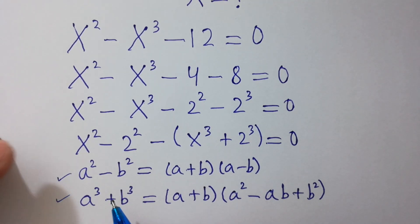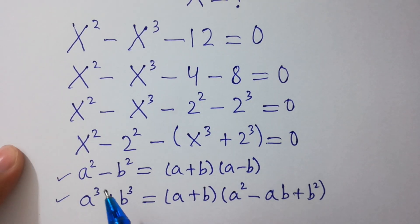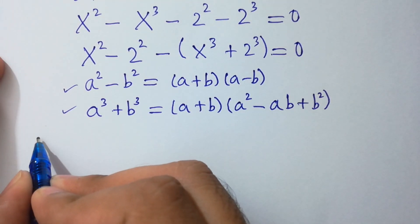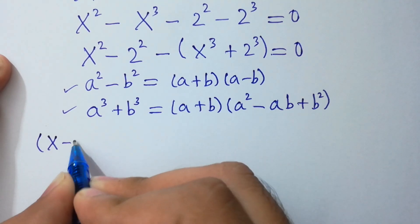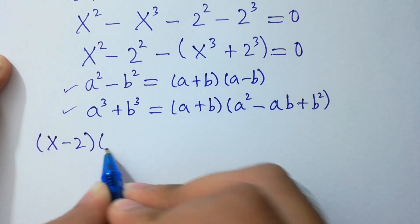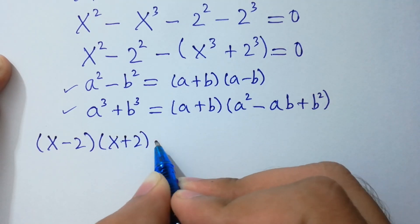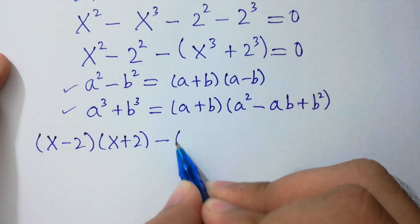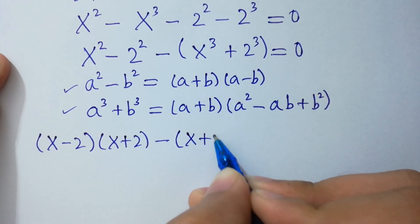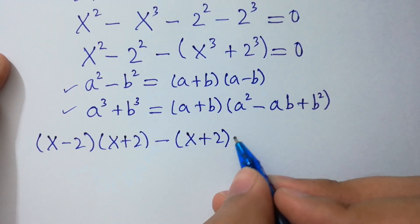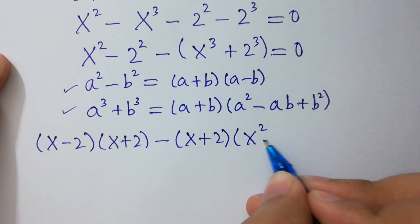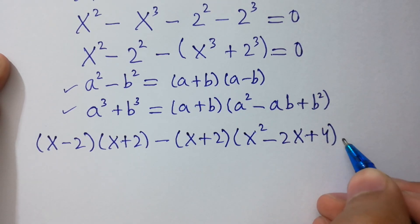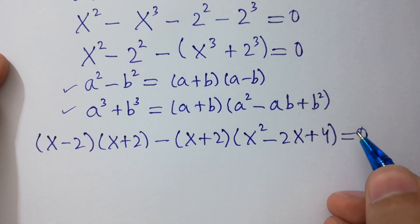So we can write x squared minus 2 squared as (x minus 2)(x plus 2), and x cubed plus 2 cubed can be written as (x plus 2)(x squared minus 2x plus 4), equals 0.